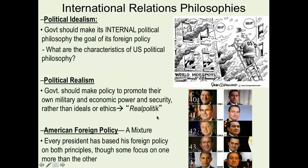Why did we maintain friendly relations with Mubarak? It wasn't because he was promoting fairness and democracy. It was the idea of real politik: he was promoting military stability in the Middle East. Our ally Israel was relatively safe, Egypt was not creating havoc in the region, and it created a relatively stable atmosphere. This goes to the question: should the United States promote idealism, realism, or a mixture of the two?